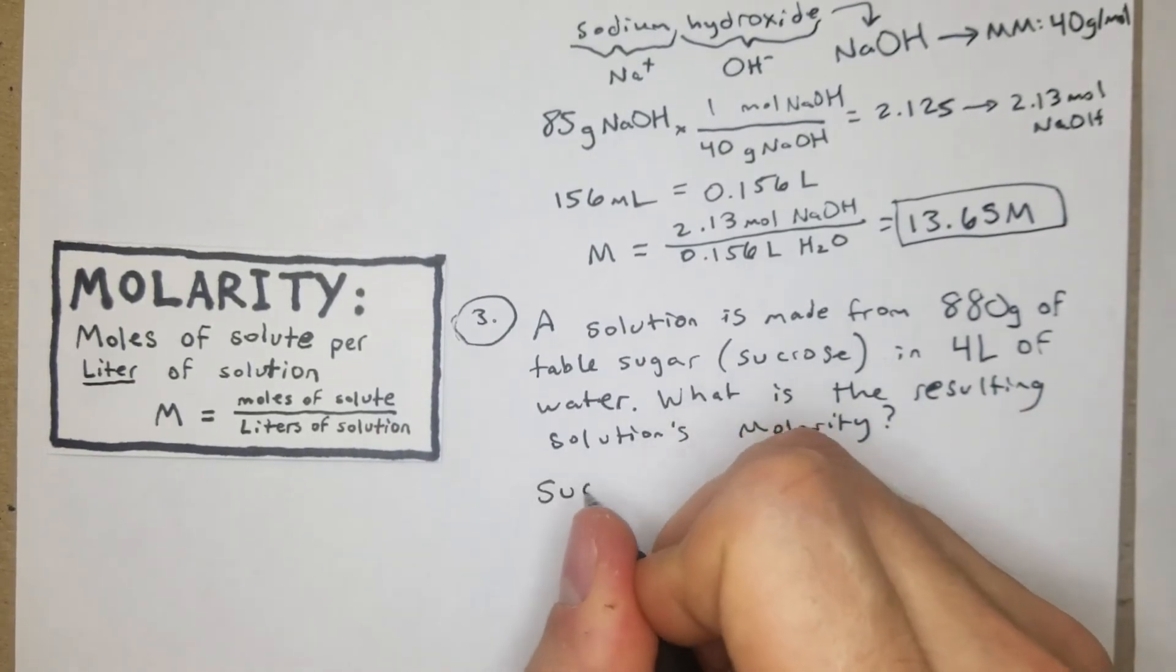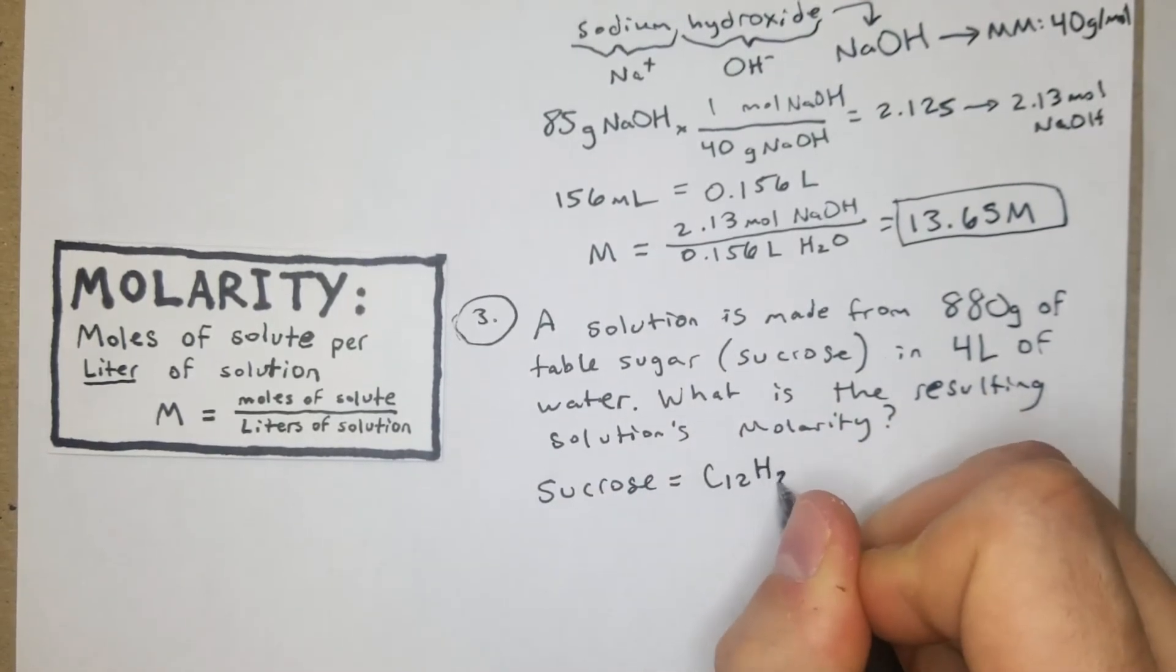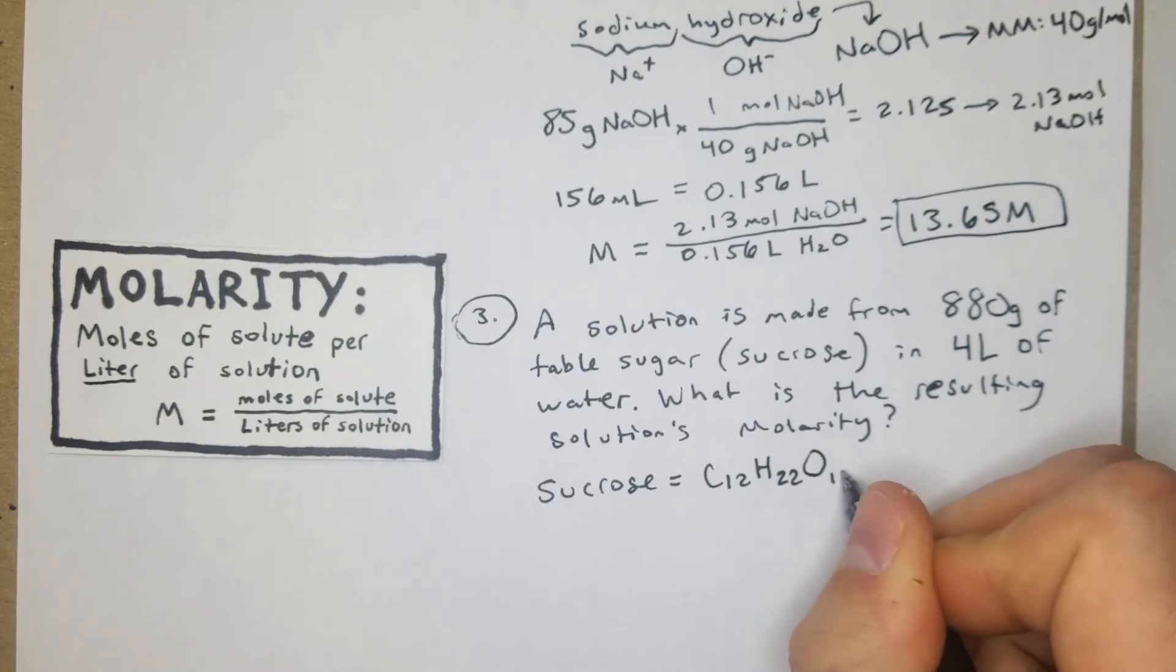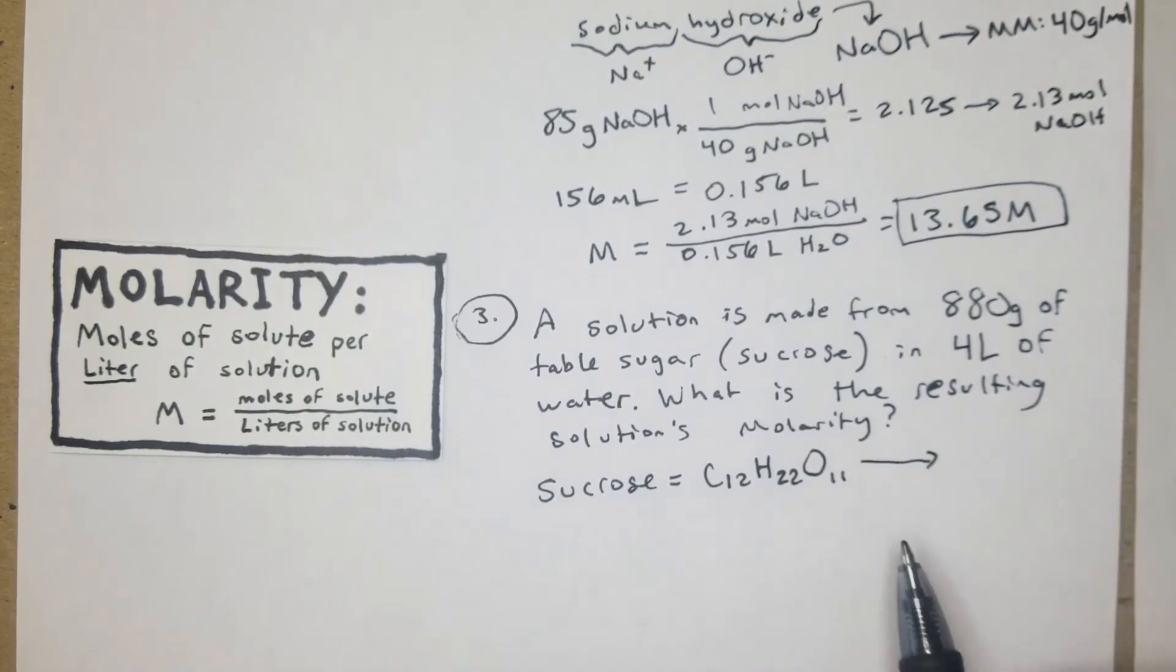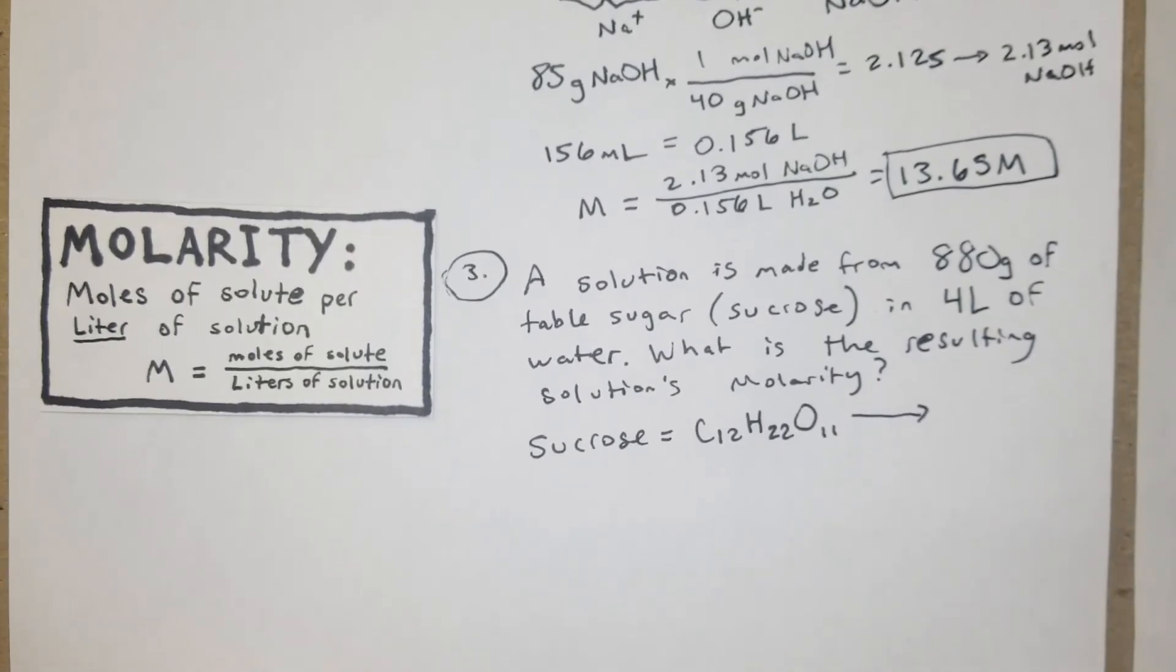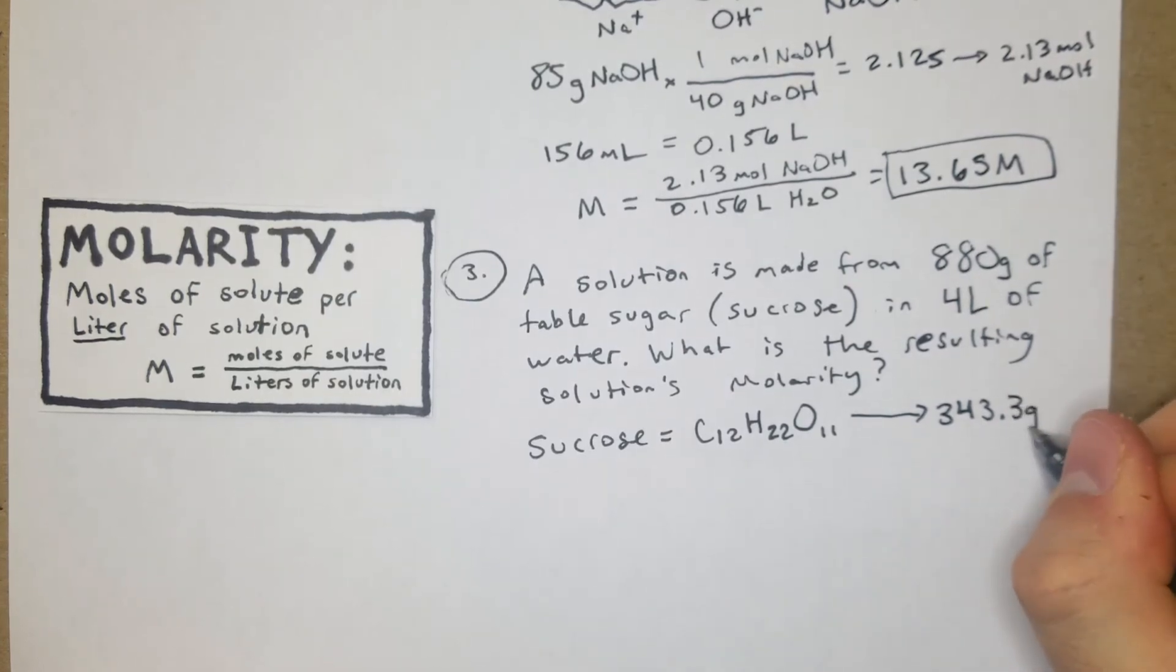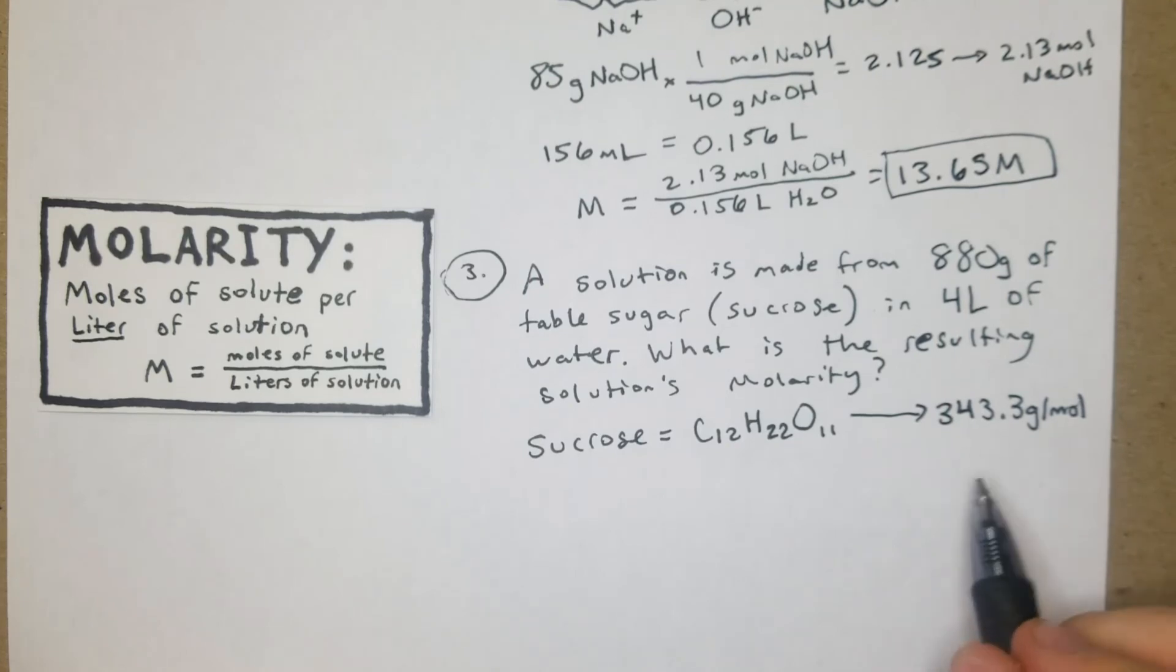First off, we have sucrose, which is going to be C12H22O11. I pre-calculated the molar mass, but sometimes you'll get those larger molecules - maybe your professor is just trying to incorporate some real molecules, or maybe it's going to slow you down to have to calculate that. It's just like one more kind of test of your ability to quickly answer these questions. That's going to be our molar mass of sucrose.